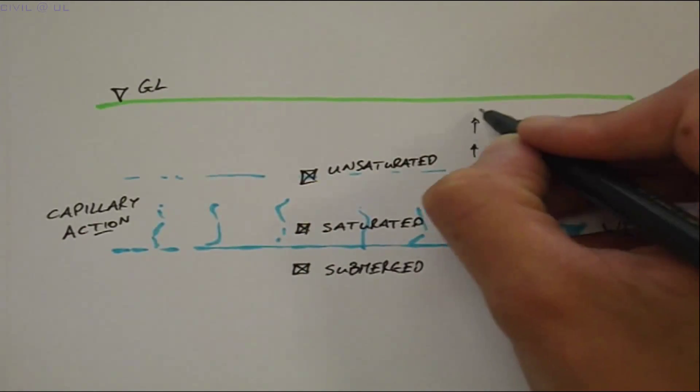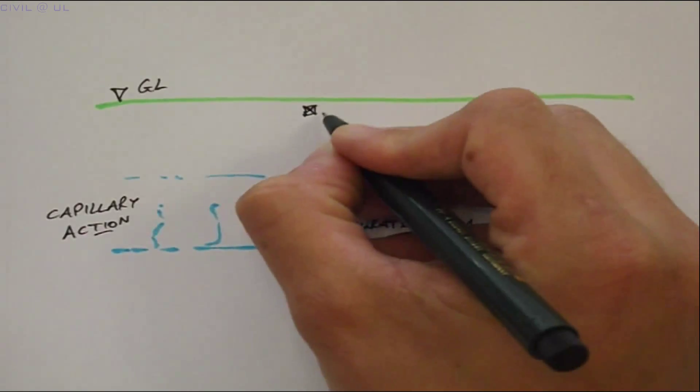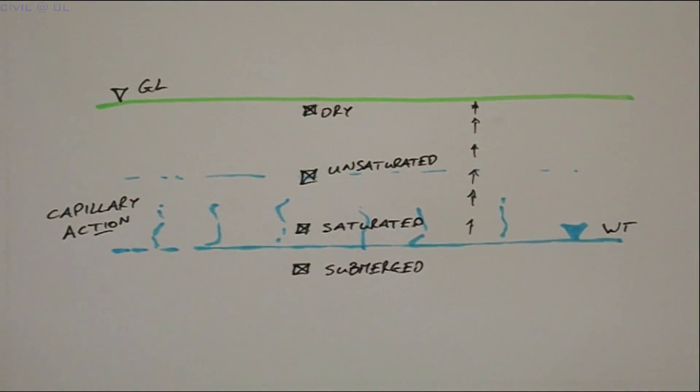And finally, due to the sun's heat, we often encounter a layer of dry soil close to the surface.